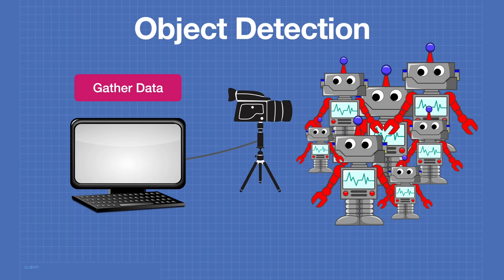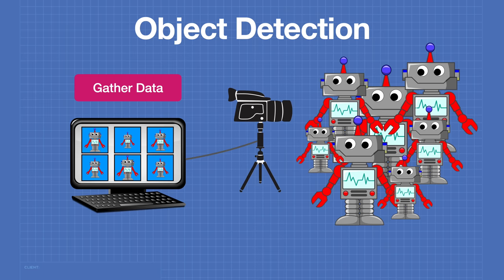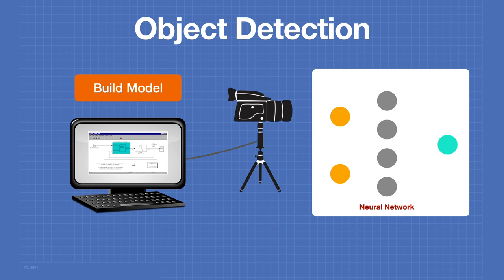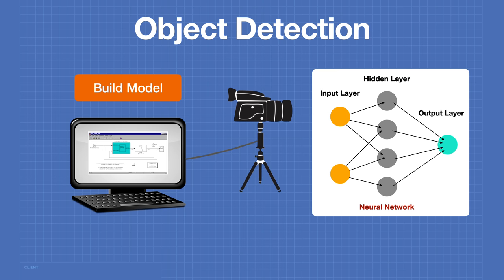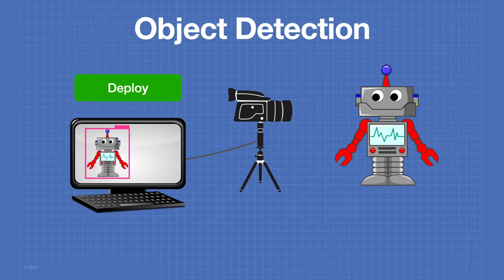The first step in any object detection project is to gather data — a number of images of the object to be detected. This can be done using a camera or an image bank, and it is not uncommon to need a hundred or more images. After obtaining and labeling our images we'll use them to build a model using a neural network, which consists of nodes or neurons with multiple outputs that are weighted to determine a response. A neural network functions in many ways like the human brain. Once our model is built it can be deployed and we can continue to train it to improve accuracy.